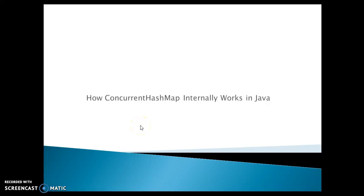Hello friends, welcome. In this video tutorial we are going to discuss how ConcurrentHashMap internally works in Java. From Java 5 onwards, ConcurrentHashMap is introduced as another alternative for HashTable, or explicitly synchronizing the map using the synchronized map method of the Collections utility class.